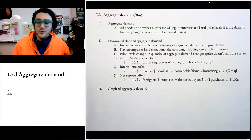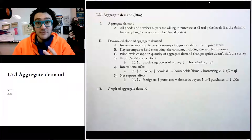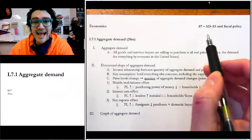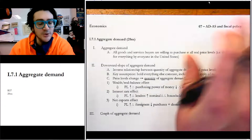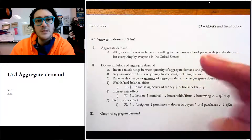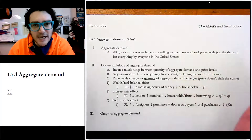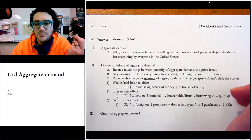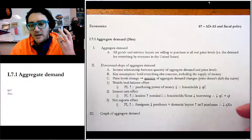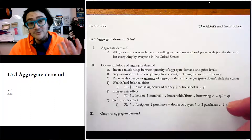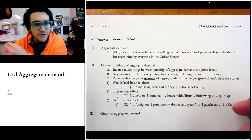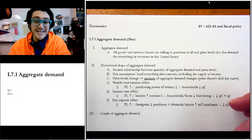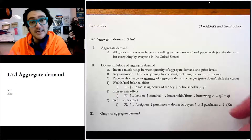Hi there. In this video, we're doing the first lecture in Unit 7. This whole unit is about one economic model called aggregate demand and aggregate supply, along with fiscal policy — one of the tools in the toolbox that we can use to help the economy. Remember the first question at the beginning of the semester was about how the economy is doing — that was Unit 6. Now it's about what do we do about it. So we need to learn the ADAS model, or aggregate demand and aggregate supply.